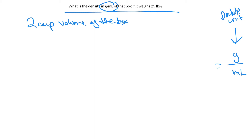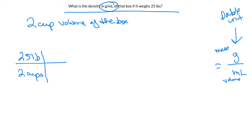The saying is: if you want a double unit, you start with a double unit. I don't see a double unit in the problem, but I can make one. I want mass on top and volume on the bottom, so I'm going to write the mass on top — 25 pounds — and volume on the bottom — two cups. This sets up a double-unit to double-unit factor labeling problem. I want pounds per cup converted to grams per mL. From my metric conversion sheet, there are 454 grams in a pound, so I can get rid of pounds and get to grams.